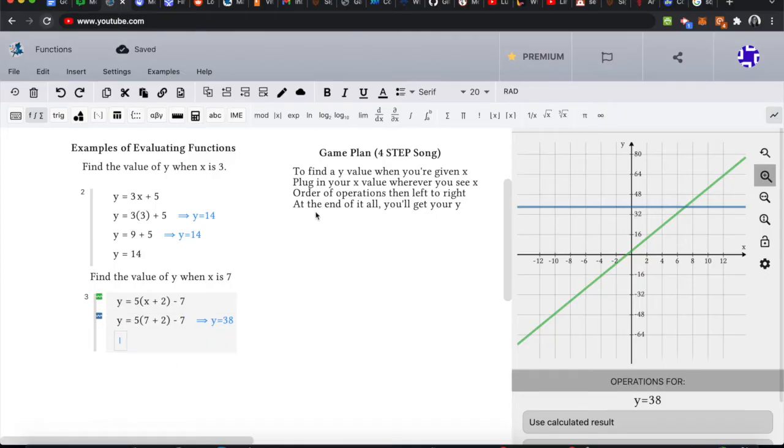Now we see order of operations, then left to right. So with order of operations, we see that there's a parenthesis right here. And whatever is inside the parenthesis, we evaluate that first before we do anything. We have y equals 5 times what is 7 plus 2? That is 9. And then we do minus 7.